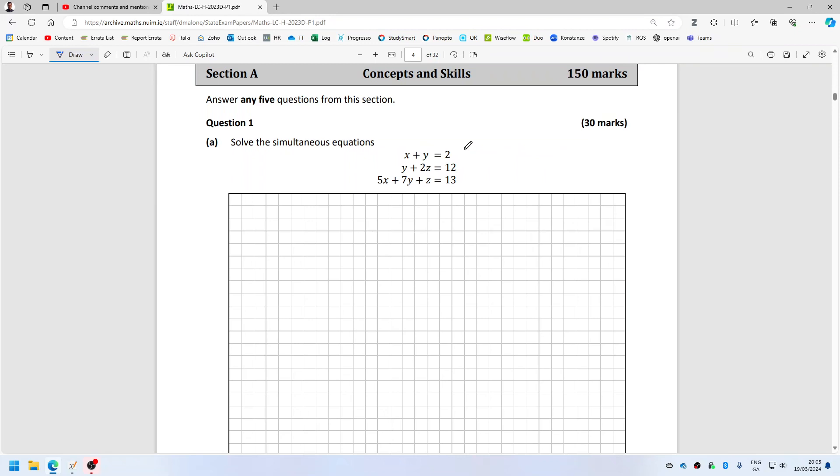So multiply that by seven and times that by seven. So I have 7x + 7y = 14, and then I have 7y + 14z = 84, and then I have 5x + 7y + z = 13.